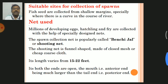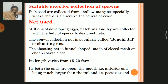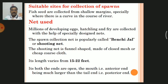Suitable sites for collection of spawn: fish seeds are collected from shallow margins, meaning where the water depth is very less, especially where there is a curve in the course of rivers.